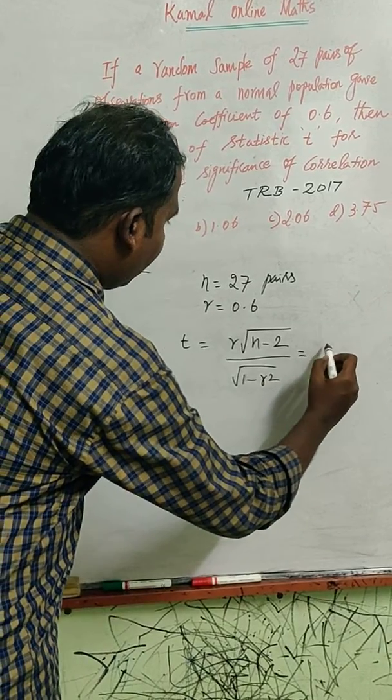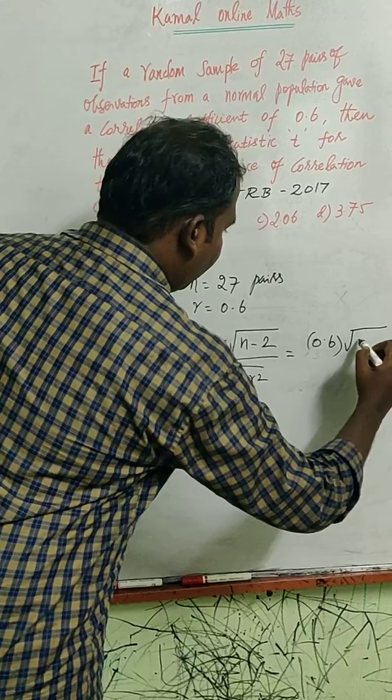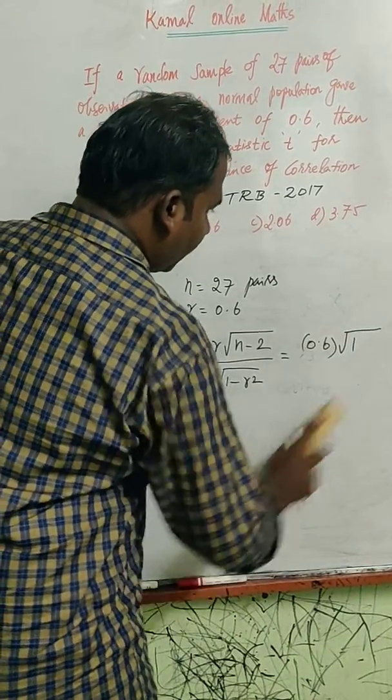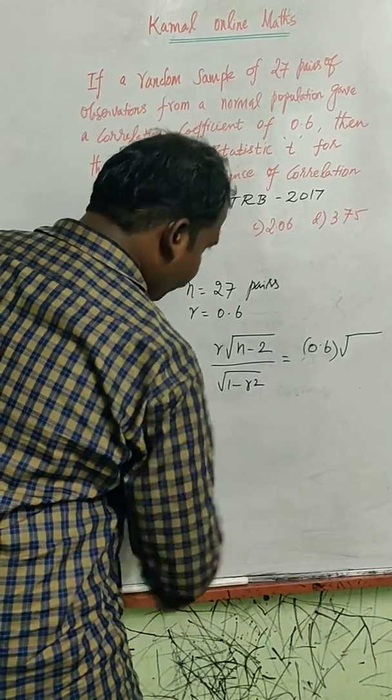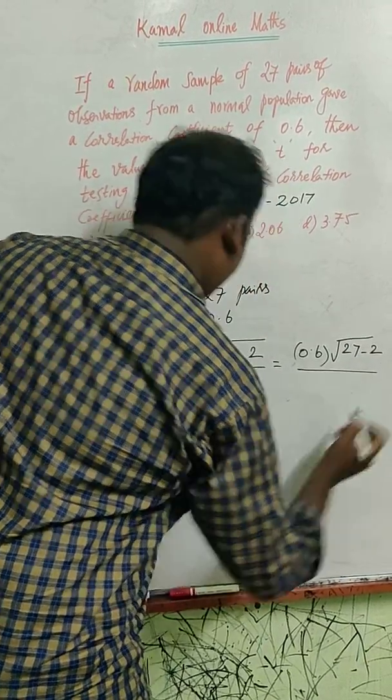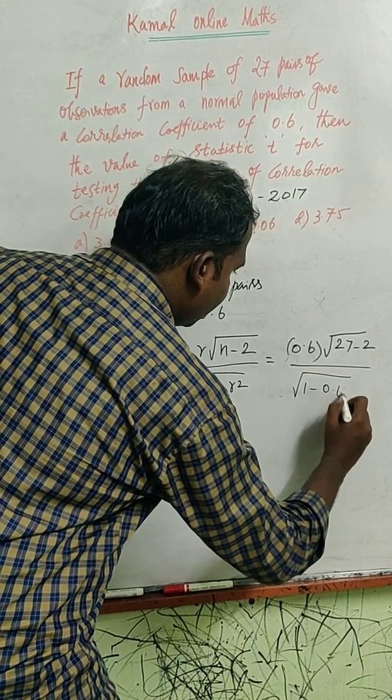We substitute r as 0.6, 1 minus n minus 2, n is 27, 27 minus 2, 1 minus r square, 1 minus 0.6 square.